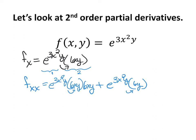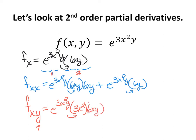We can also do the mixed second order partial derivative with respect to y. We still have a first and second function, both containing y, so we use the product rule — only now with respect to y. Rewrite the exponential and chain rule out with respect to y to get 3x squared, times the second term. Plus the first term, e to the 3x squared y, times the derivative of the second. The second term is 6xy, whose derivative with respect to y is 6x.